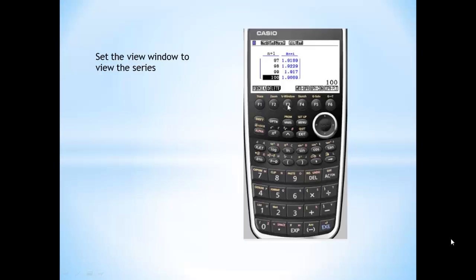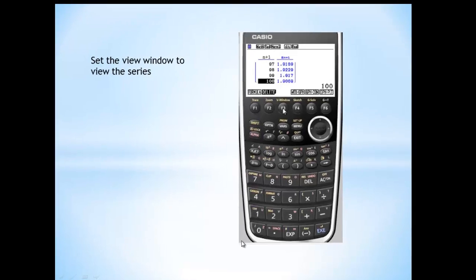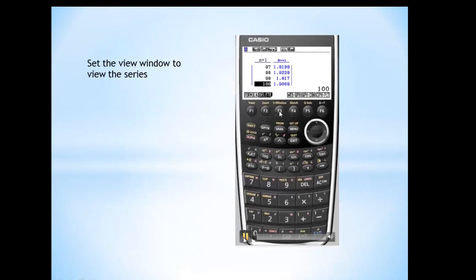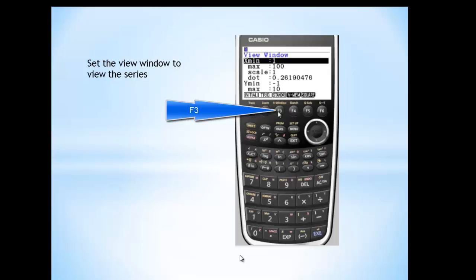In order to view the graph of the series, you need to set up the view window for calculator. To do this, you have to shift F3 to set up view window. So shift, then F3 to view window. X from 1 to 100, and the value of Y, we are going to set it to minus 1 to 3.